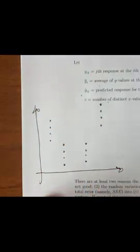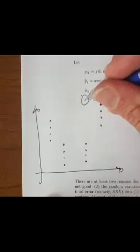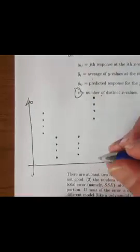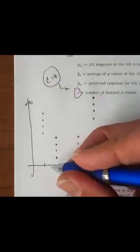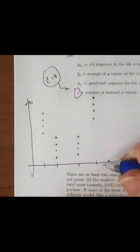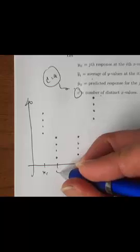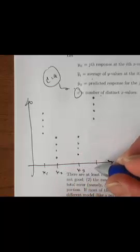It's going to be required that we fix some number of distinct x values. In this case, I've got c equals 4. I've got 1, 2, 3, 4, four x values. I've got to label them like this: x1, x2, x3, x4.